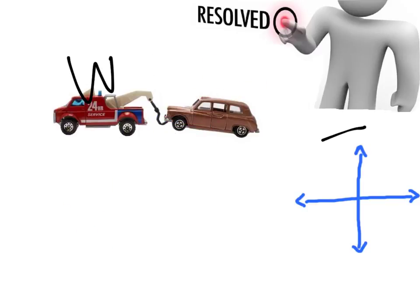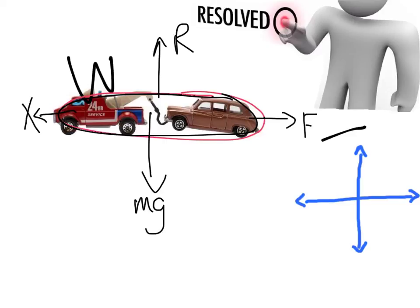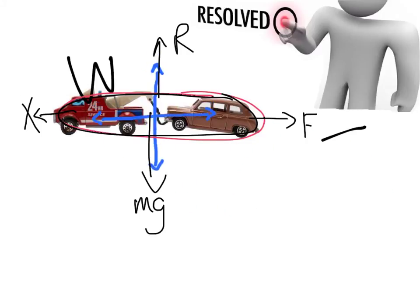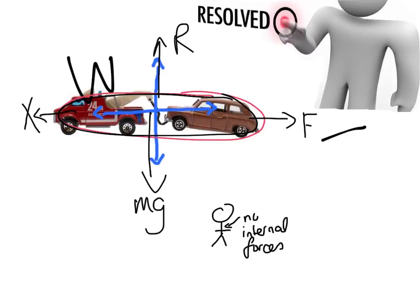One thing we can do to avoid worrying about the tension at all is to treat the car and the truck as one object. Then we've got mass times gravity, resistances, the driving force of the truck, and a reaction — and all those forces fit nicely under our axes with nothing to resolve, because the tension becomes an internal force. Just as we wouldn't draw internal organ pressures on a person-particle diagram, internal forces are not drawn on our diagram. So it's a lot simpler — it's good to remember you can do that.